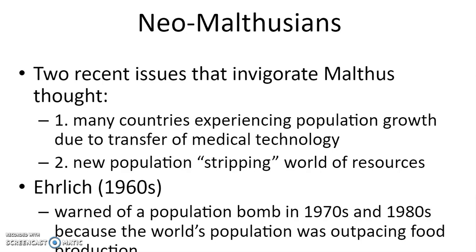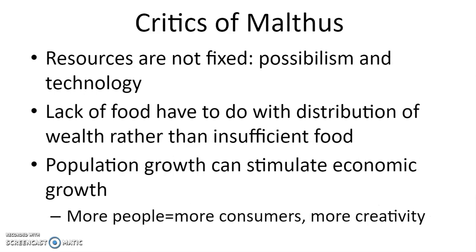Ehrlich, in the 1960s, a pro-Malthusian geographer, warned of a population bomb in the 1970s and 1980s because the world's population was outpacing food production. Critics of Malthus say resources are not fixed — we can increase food production, move to renewable energy, create new ecumene through possibilism and technology. They also argue the lack of food is more about the distribution of wealth and food than insufficient supply — it's an allocation issue.